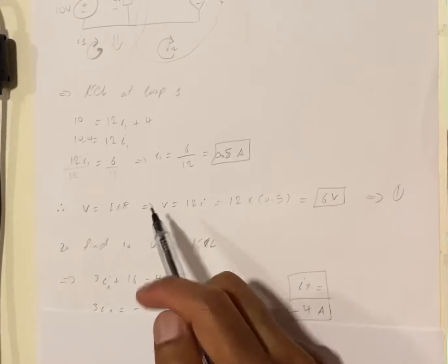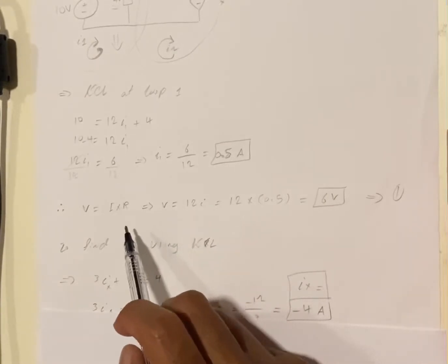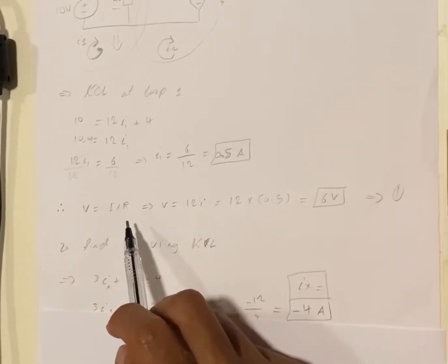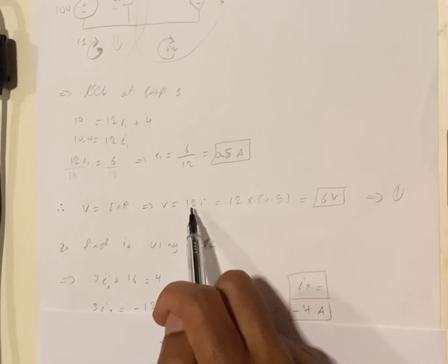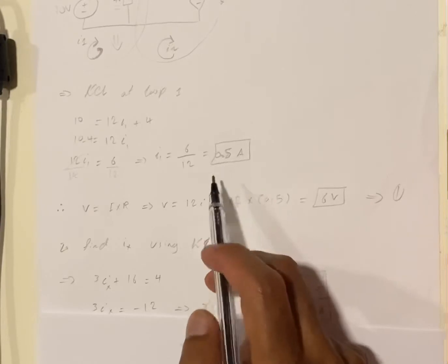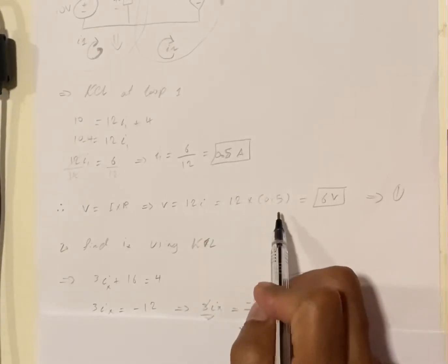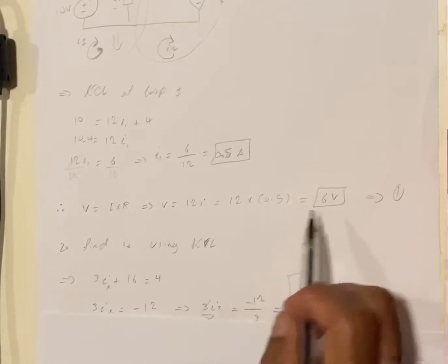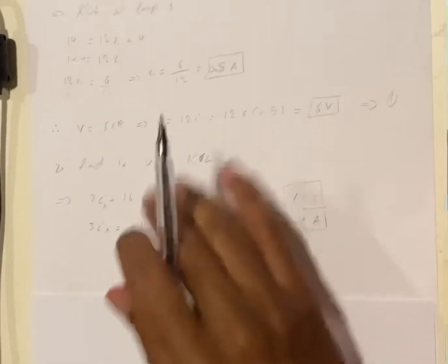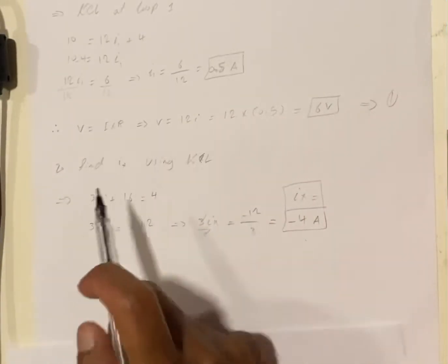We know that the voltage is equal to I times R, the current times the resistor. So V equals 12 times I, and we got the value of I which is 0.5. We multiply 12 by 0.5 and we're gonna get 6 volts.